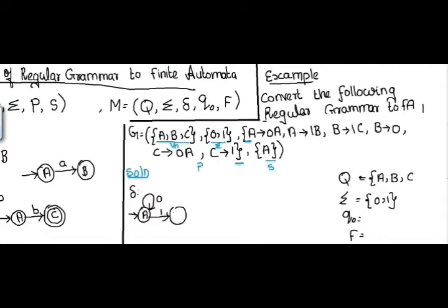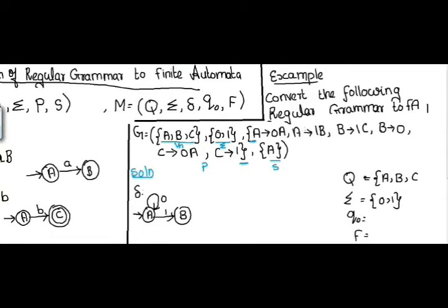Now moving to the next production: B tends to 1C. So state B with input 1 gives next state C. That production is now complete.